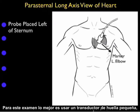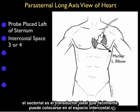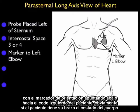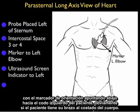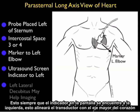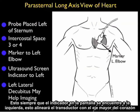For this examination, it's optimal to use a small footprint phased array type probe that can easily sit between the ribs. We're going to place the probe just left of the sternum at about intercostal space three or four, with the marker dot on the probe aimed down towards the patient's left elbow if the patient's left elbow is down by the side. That's with the caveat that the ultrasound screen indicator would be over towards the left of the screen. This will align the probe in the long axis of the heart.